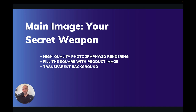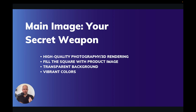Maybe it just shows your product, and then you add a little prop or something. You can add vibrant colors — for example, a vitamin C serum with a splash right behind the bottle. You can test different colors with that, and this is something you can do split testing on to see what's going to work best for your product with different color schemes depending on your brand.